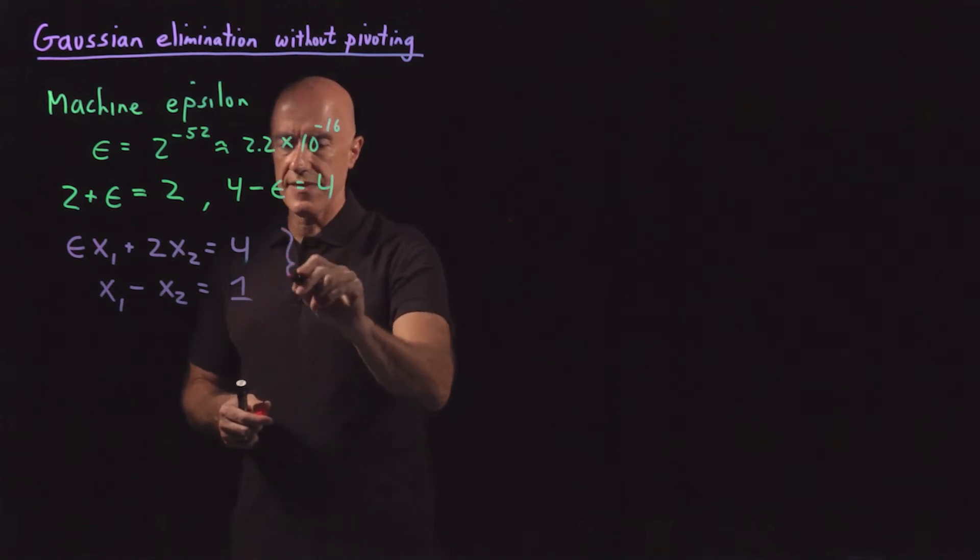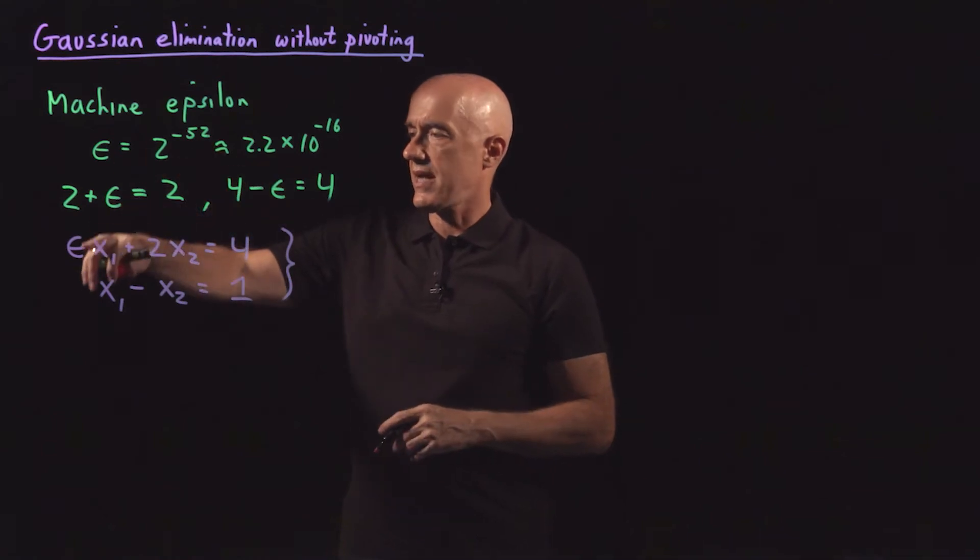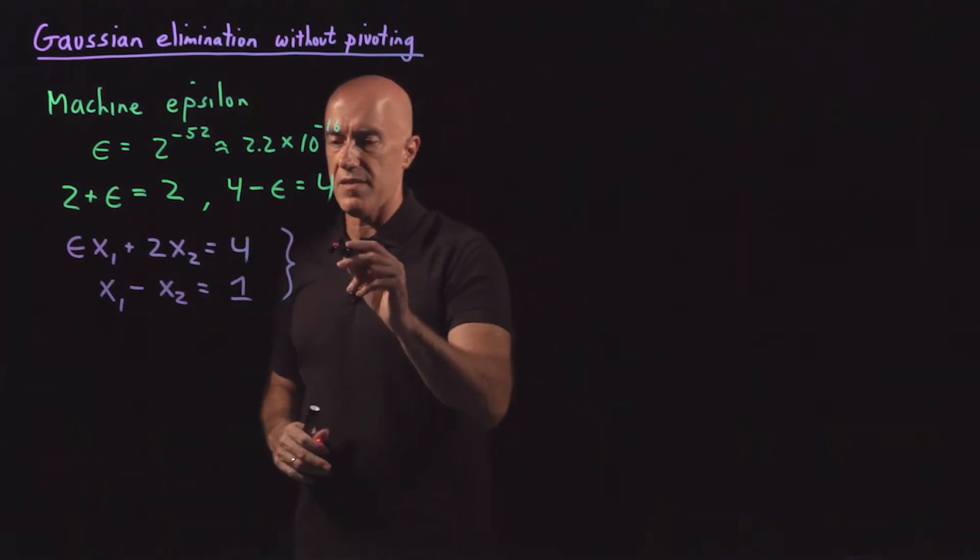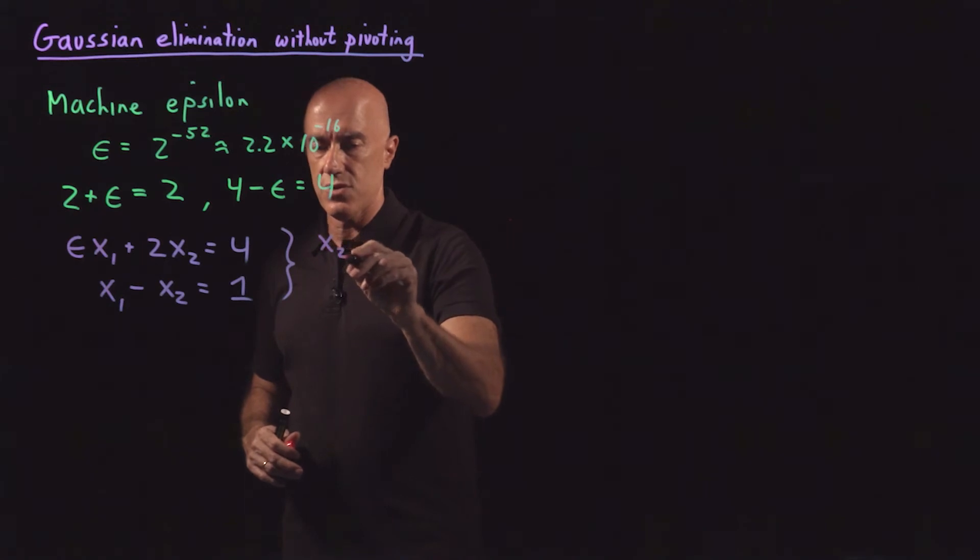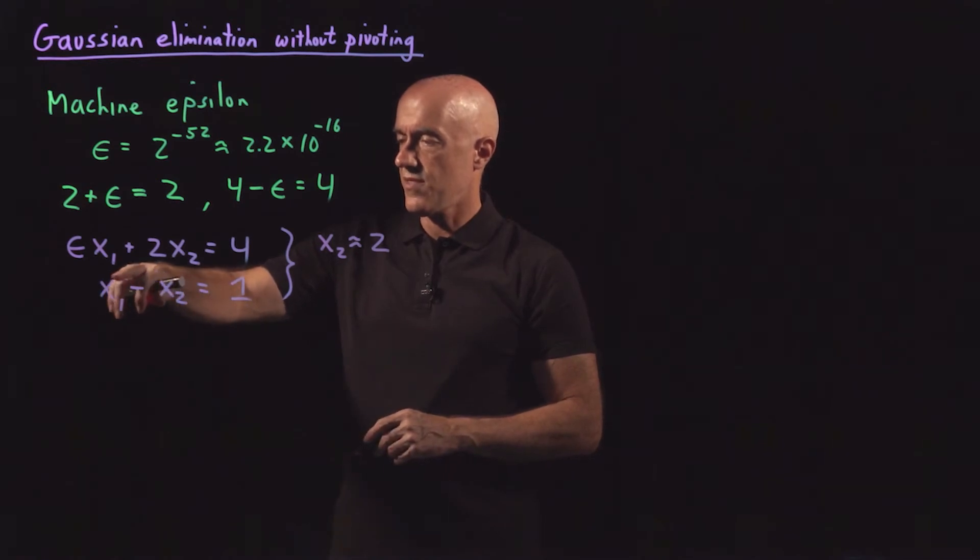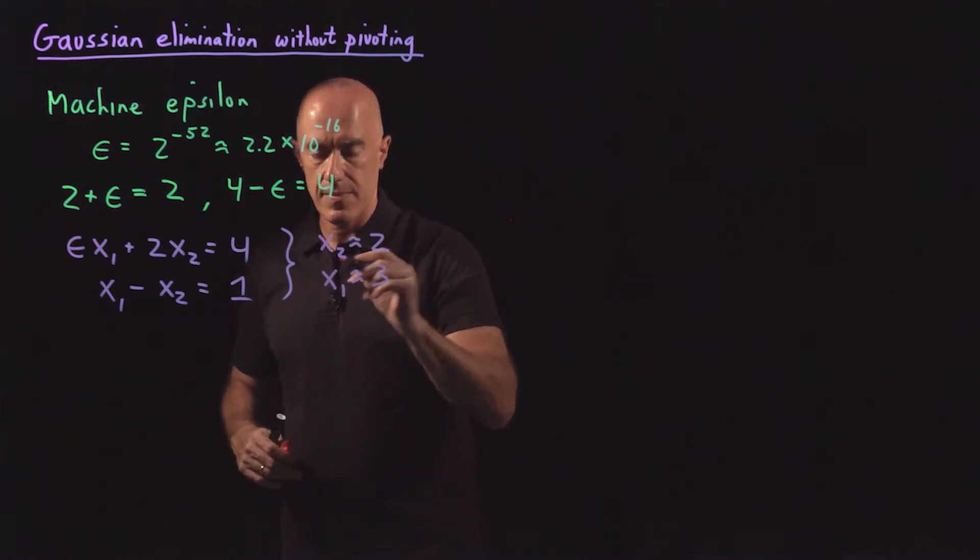If we look at this system, we can kind of approximate the solution. Epsilon is a tiny number. Epsilon times x1 we can neglect. And then x2 is approximately 4 divided by 2. So x2 is approximately 2. And if x2 is approximately 2, then 3 minus 2 equals 1. So x1 is approximately 3.